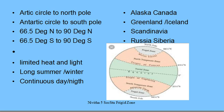The Arctic Circle to the North Pole — that is 66.5 degrees North to 90 degrees North — is the North Frigid Zone. The Antarctic Circle to the South Pole — 66.5 degrees South to 90 degrees South latitude — is the South Frigid Zone.